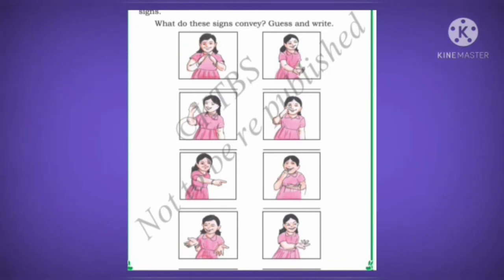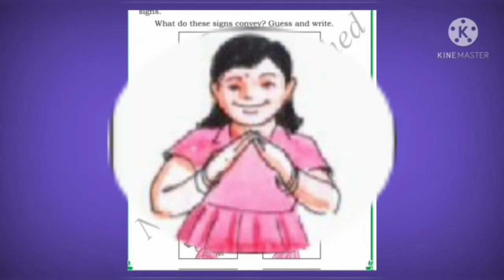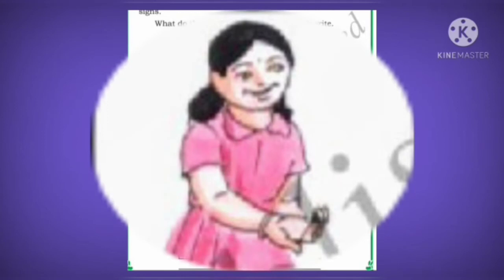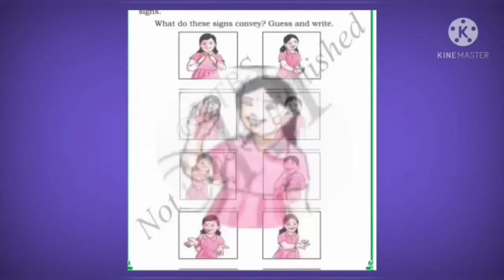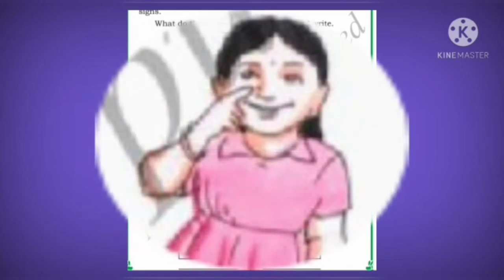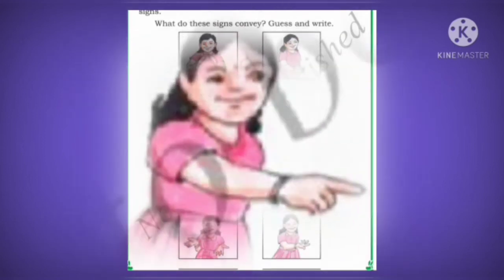In our textbook there are various signs. Let us guess what these signs convey. The first sign conveys Namaste. The second sign conveys welcoming a person. The third sign conveys bidding goodbye. The fourth sign conveys she is a girl.